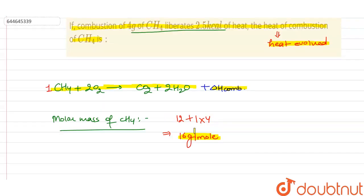So we have to find as per the mole. By unitary method, we can say that since 4 gram of CH4 gives 2.5 kilocalorie of heat,